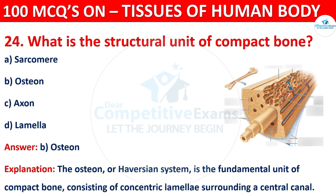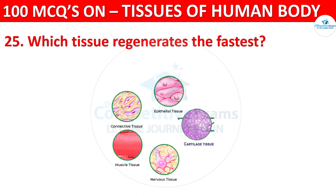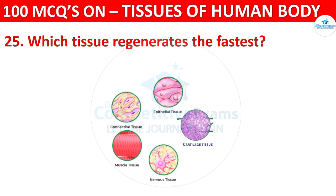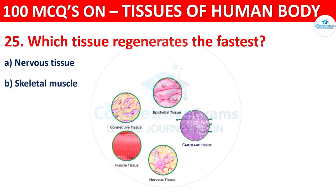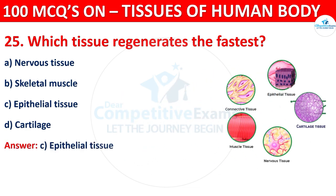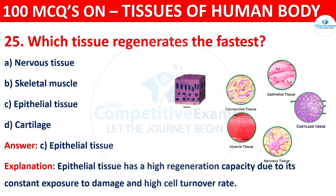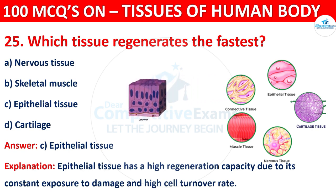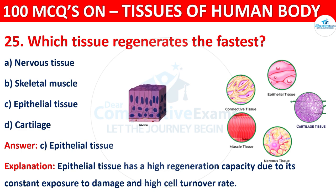Question number twenty-five: which tissue regenerates the fastest? Options are loose connective tissue, skeletal muscle, epithelial tissue, or cartilage. The correct answer is C, that is epithelial tissue. Epithelial tissue has a high regeneration capacity due to its constant exposure to damage and high cell turnover rate.